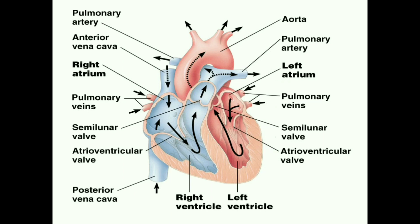Next is the pericardium — the double membrane sac by which the heart is covered. Outside the heart there is a double membrane sac called the pericardium. In the next video we will discuss how all these parts work, including the conduction system of the heart. Thank you for watching.